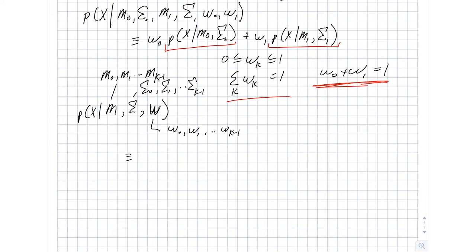We can set this equal to just a weighted sum over all of these Gaussians. That sum looks like this: sum of WK likelihood of x given MK and sigma K. And as long as we adhere to these two criteria here, then this full probability density function is indeed a proper probability density function.